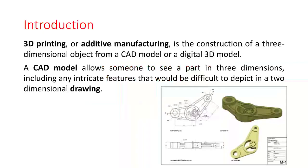Here on your screen you can see a 3D model and the 2D model. We can manufacture a 3D component by using this 3D model with the help of 3D printing or additive manufacturing. The 3D model is nothing but the input for the additive manufacturing process.